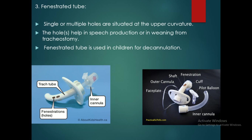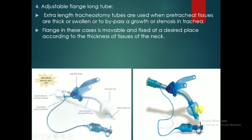The fenestrated tube is used in children for decannulation. Adjustable flange long tubes — these are the adjustable flange long tubes. Extra-length tracheostomy tubes are used when peri-tracheal tissues are thicker or swollen, or to bypass a growth or stenosis in the trachea. This tube can be used in obese patients. The flange in these cases is movable and fixed at a desired place according to the thickness of tissue in the neck.